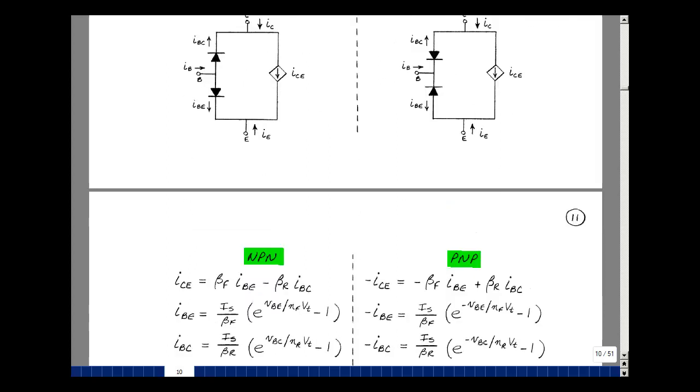The equations used in SPICE for the NPN transistor are listed here. The current that's in this base emitter diode is our Shockley equation, but multiplied by I sub S over beta F.